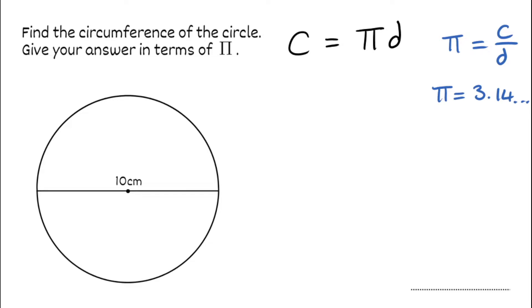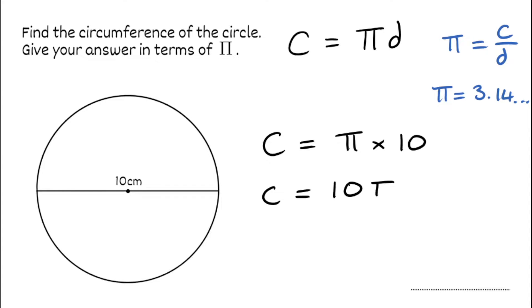For this first question it says to give our answer in terms of pi. So I'm going to substitute: the circumference is equal to pi multiplied by the diameter, which in this case is 10. So I can rewrite this as the circumference equals 10 times pi, which I can just write as 10π. We can stop there because it wanted the answer in terms of pi. Making sure to include correct units, that would be 10π centimetres.